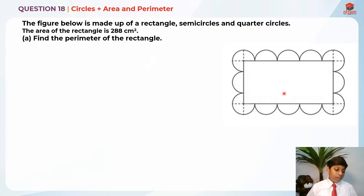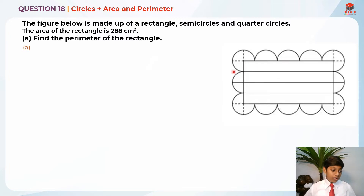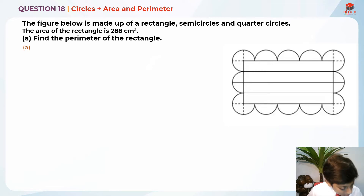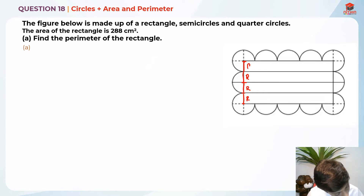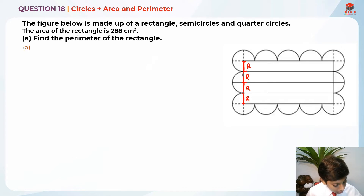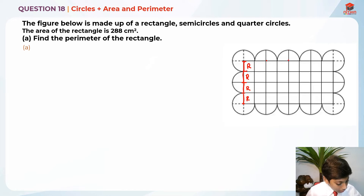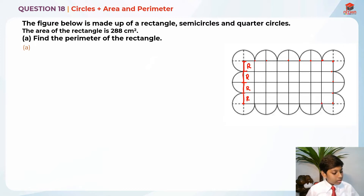I'm going to cut the rectangle into squares. I'm cutting it with three lines, each at the radius. So this is a radius, and here is another radius. Quarter circles have only radii, so everything I'm drawing here is a radius. All the radii are equal.